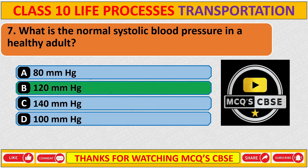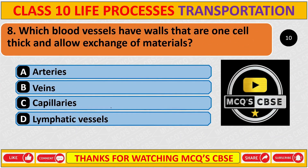What is the normal systolic blood pressure in healthy adults? The correct answer is B: 120 mmHg (Hg stands for mercury). Which blood vessels are one cell thick and allow exchange of materials? The correct answer is C: capillaries.